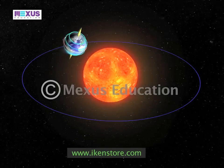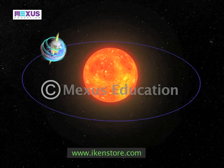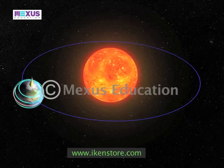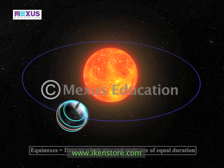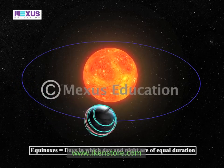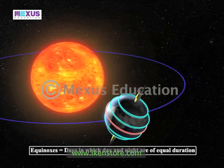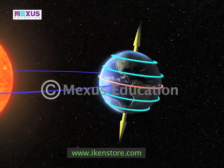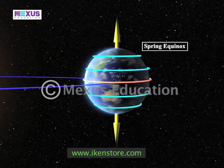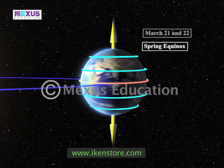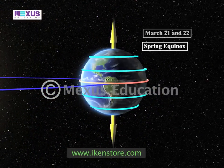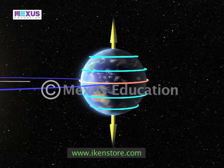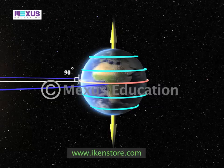Equinoxes basically comprise days in which day and night are of equal duration. The spring equinox occurs on March 21st and 22nd, when the sun's rays are perpendicular to the equator.